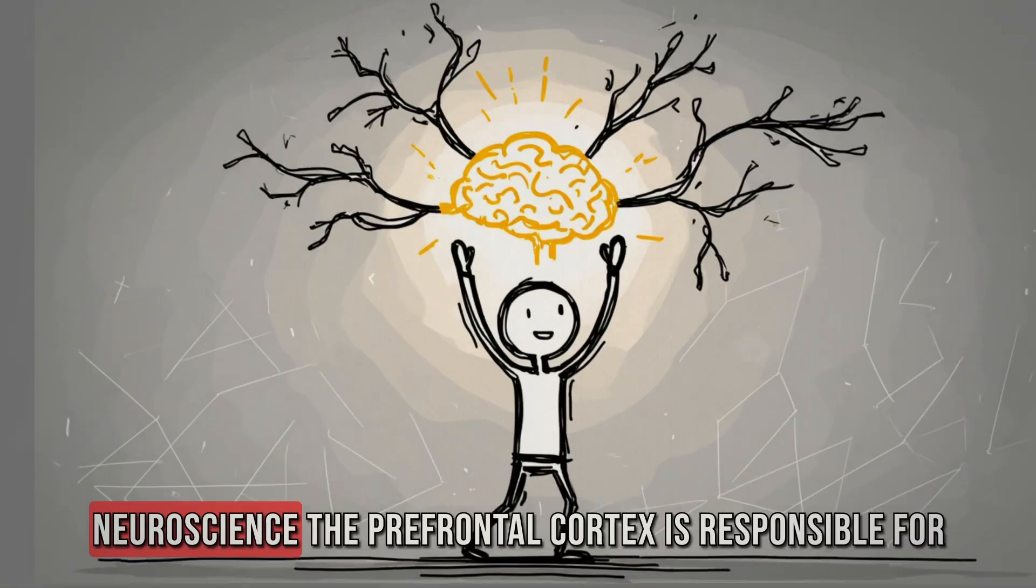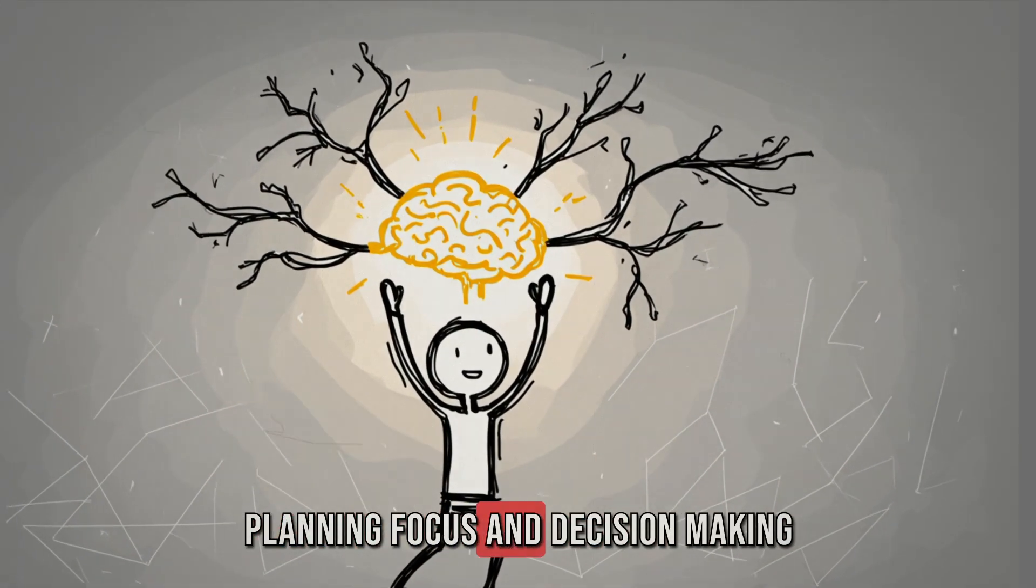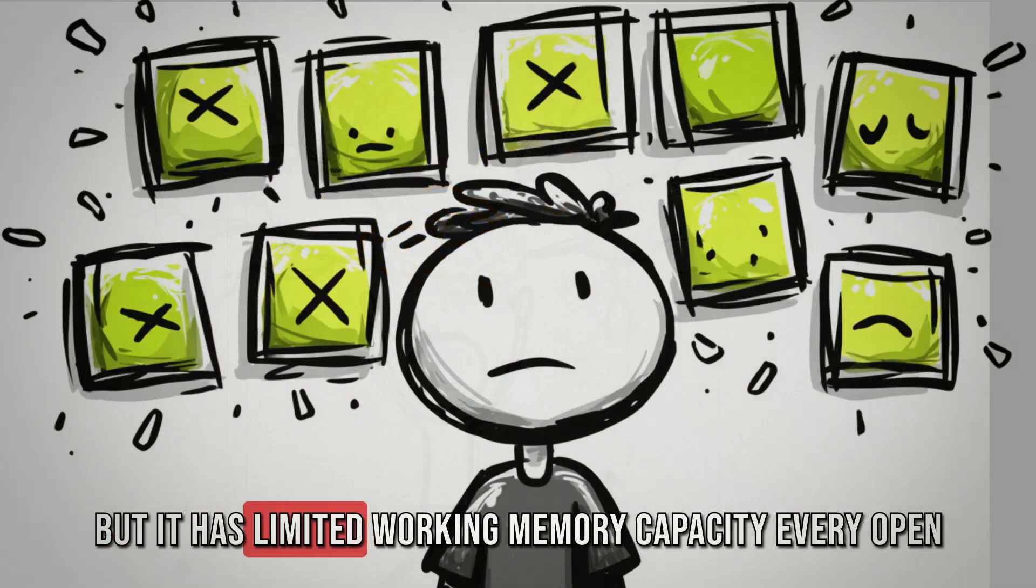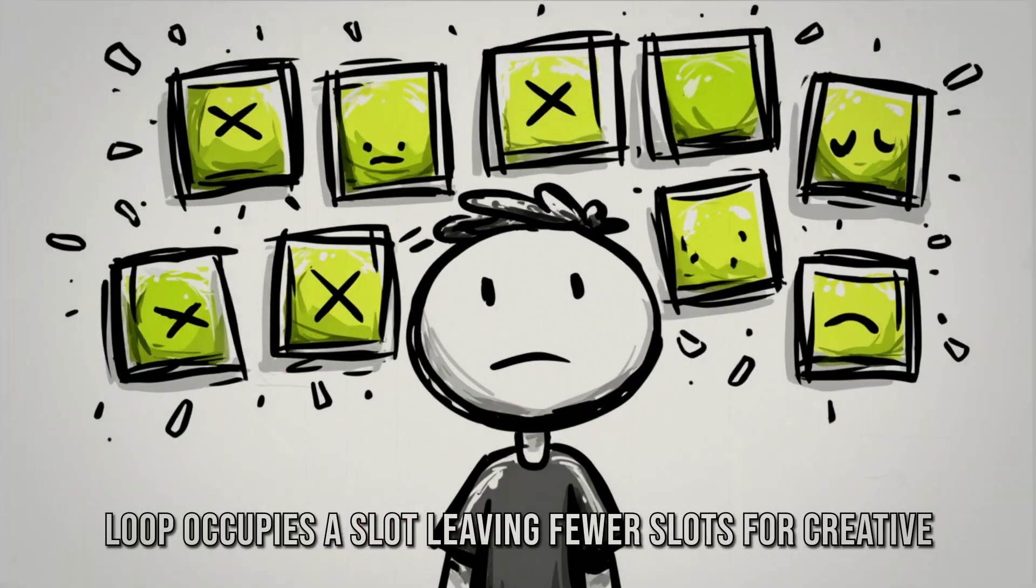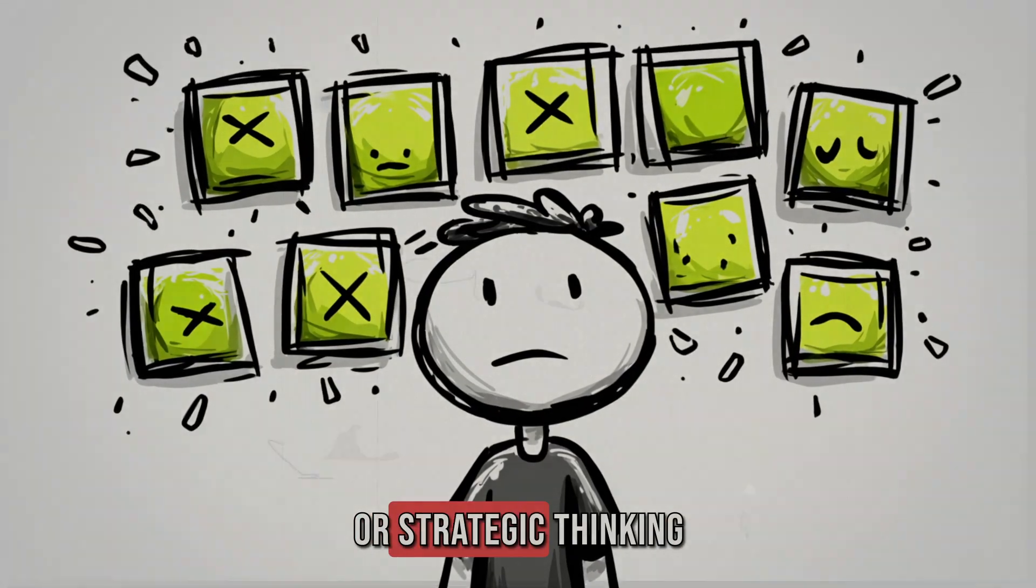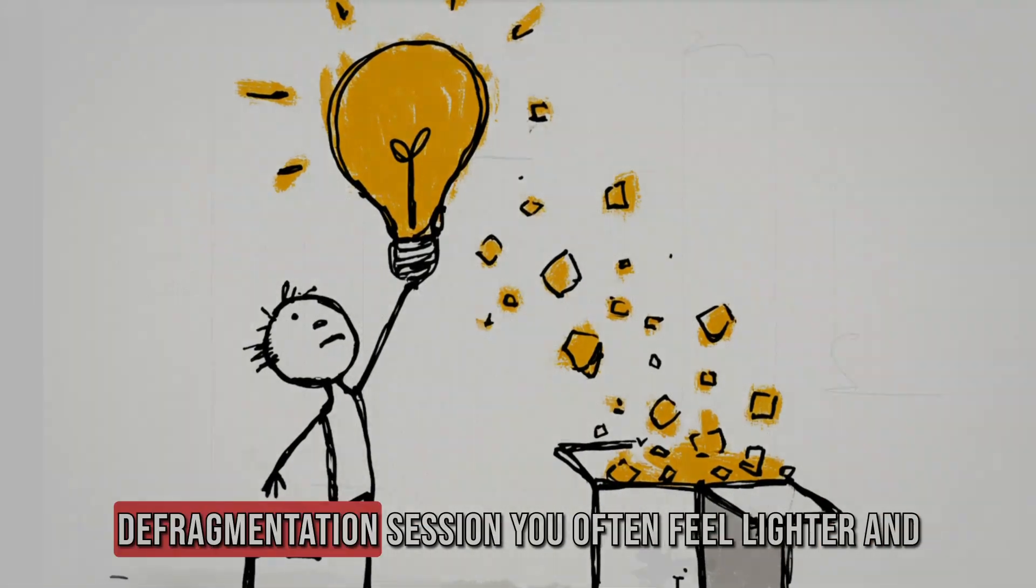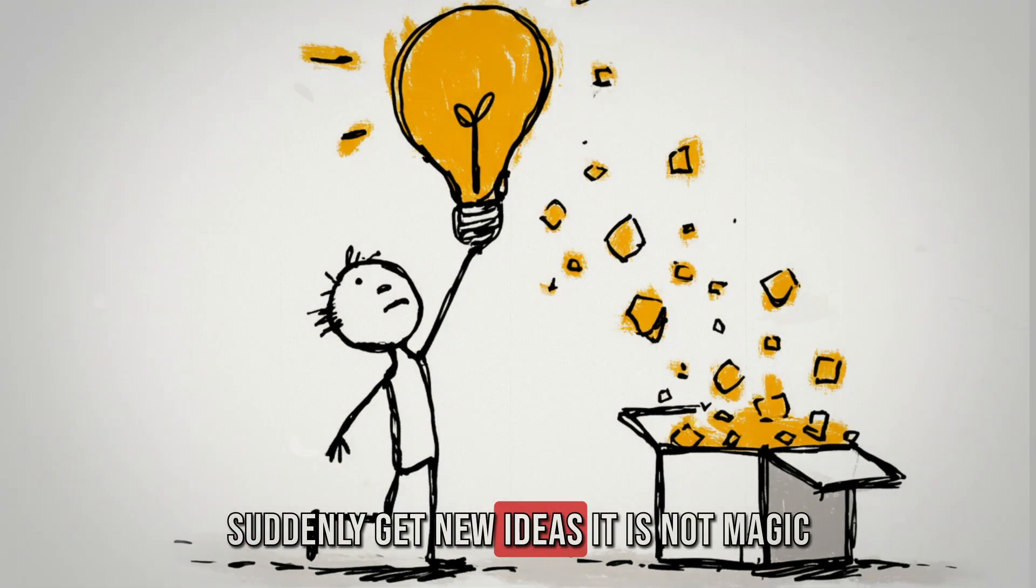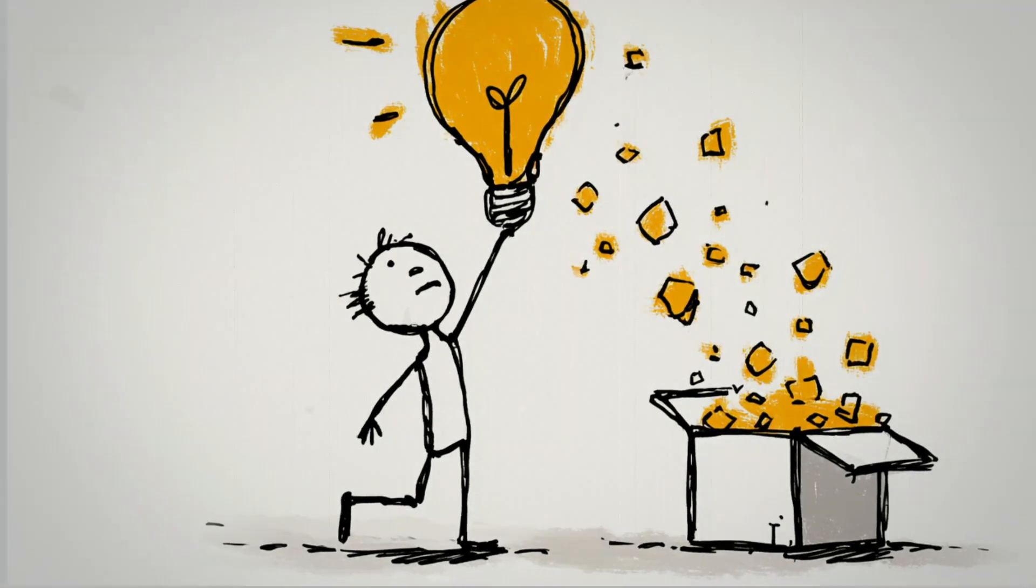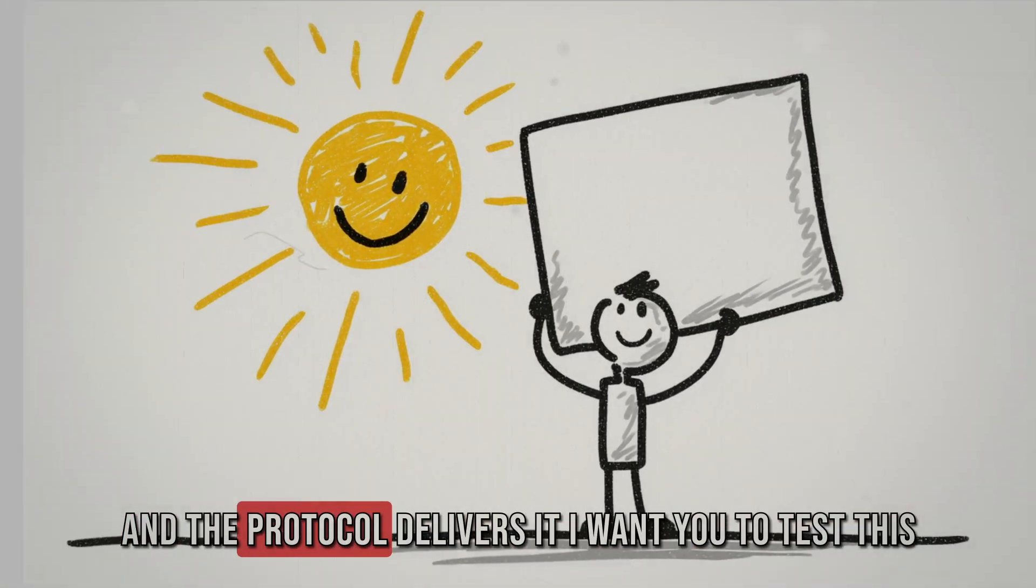Let's go deeper into the neuroscience. The prefrontal cortex is responsible for planning, focus, and decision-making. But it has limited working memory capacity. Every open loop occupies a slot, leaving fewer slots for creative or strategic thinking. By closing loops, you free up slots. That is why after a defragmentation session, you often feel lighter and suddenly get new ideas. It is not magic. It is bandwidth. Creativity requires free mental space, and the protocol delivers it.